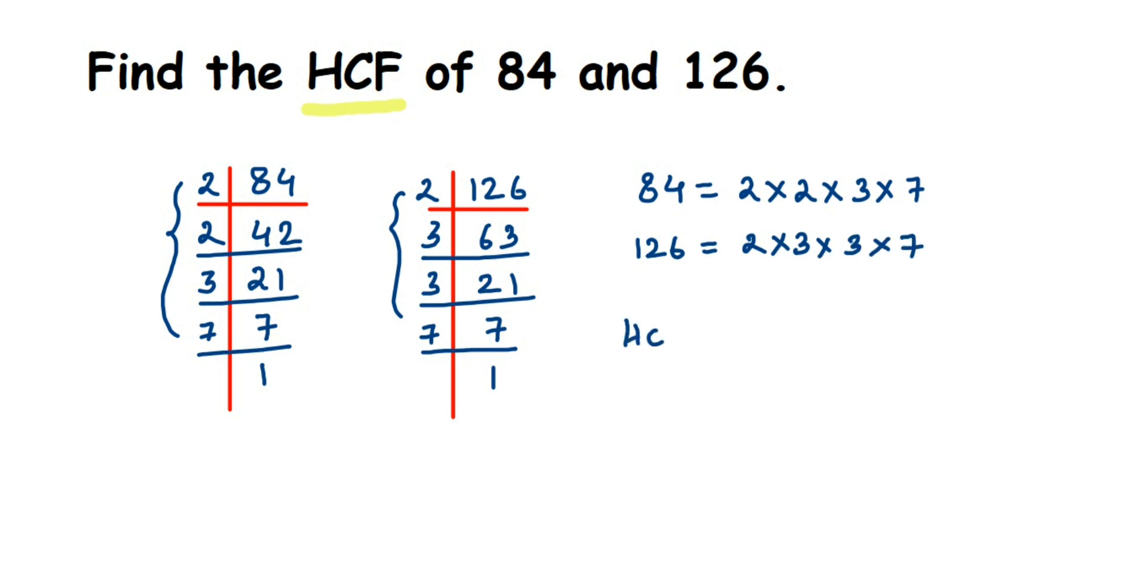Now once you have done this, you should take the numbers which are present in both. So HCF will be: 2 is present in both, and there's a 3 which is present in both, and there's a 7 which is present in both. If you look here, there's one more 2 in 84 but it doesn't have any pair in 126. Similarly for 3 also.